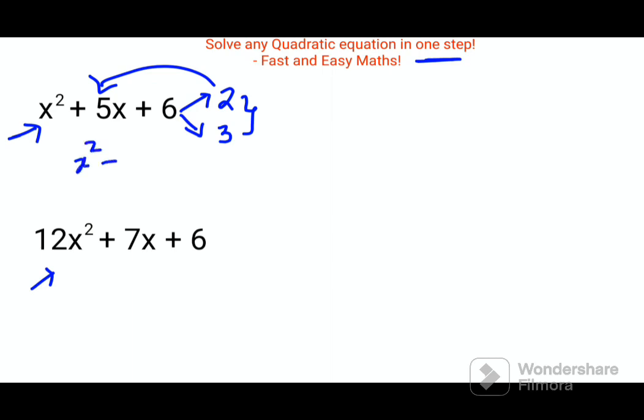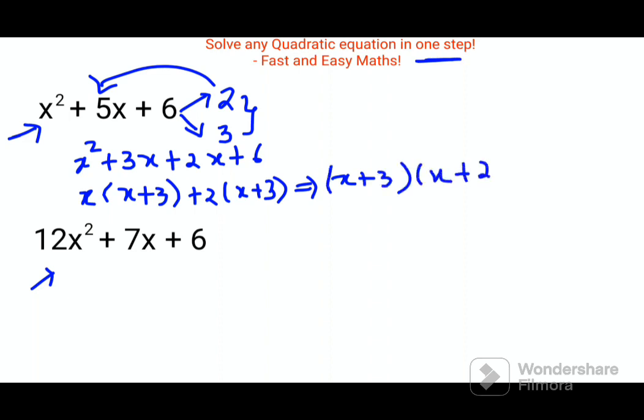So you can write this as x² + 3x + 2x + 6. Then you take x common and you get x + 3, then you take 2 common and you will again get x + 3, so eventually your answer will come out to be x + 3 and x + 2.